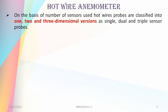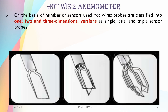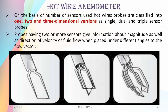On the basis of the number of sensors used, hot wire probes are classified into one-dimensional, two-dimensional, and three-dimensional versions, as single, dual, and triple sensors. Probes having two or more sensors give information about both the magnitude and direction of fluid flow, when placed under different angles to the flow vector, providing additional dimensional information.